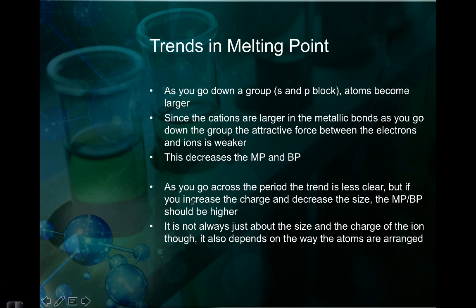If you go across a period, you don't really have that clear of a trend, but what you can do is start to compare the charge of the ions and then the size. You should see that if you increase the charge and decrease the size, because of Coulomb's law, the melting point and boiling point should be higher because they're going to be more attracted to each other. But it's not always about the size and the charge of the ion — sometimes it also depends on the arrangement of the atoms.